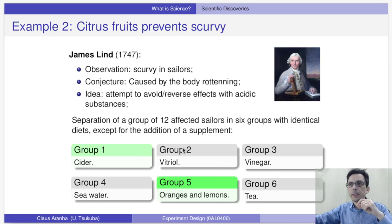Then we have vitriol and seawater, which are kind of neutral, and then we have tea because we're talking about British sailors. Anyway, he observed that the greatest effect happened on the group that had oranges and lemons and a smaller effect on the group that had cider, which is a wine made of fruit. So, after this experiment, they did not quite understand why this helped with scurvy.